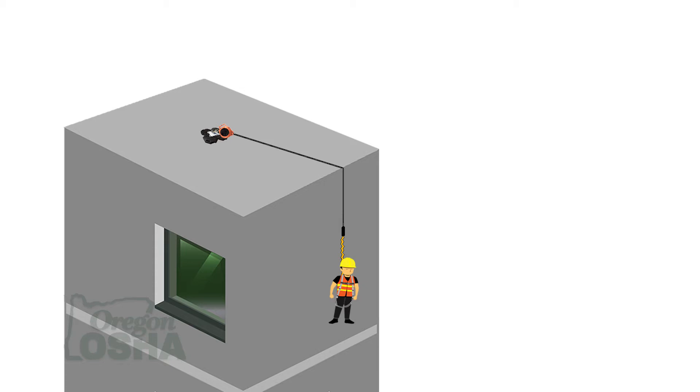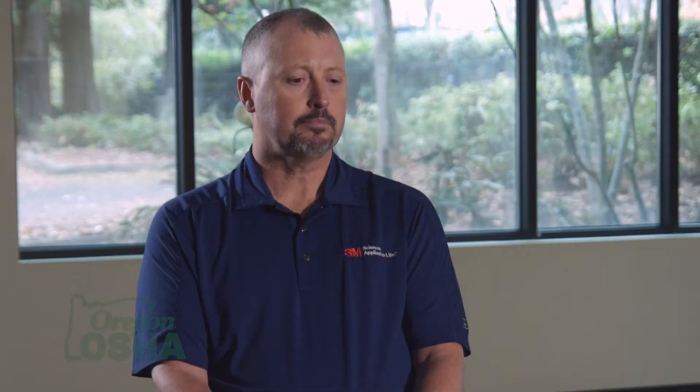When the arresting device is with the worker and they take a fall over that edge, it will function properly — reducing the forces put on both the fallen worker and on the edge where the lifeline is contacting. It also reduces how much swinging and bouncing that lifeline has on that edge.